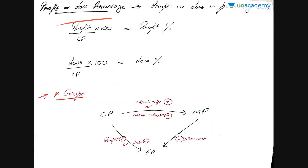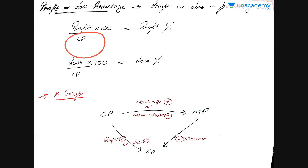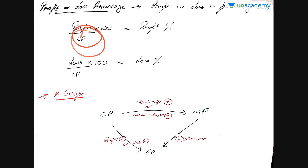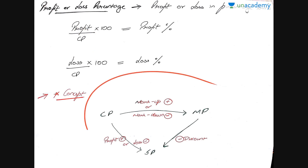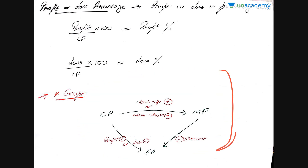Now let's discuss profit or loss percentage. Profit percentage is profit upon CP multiplied by 100. Loss percentage is loss upon CP multiplied by 100. Be very careful — in the denominator it's always CP, not SP. People sometimes mistakenly divide profit by SP to calculate profit percentage, but that is not correct. It always has to be the cost price.